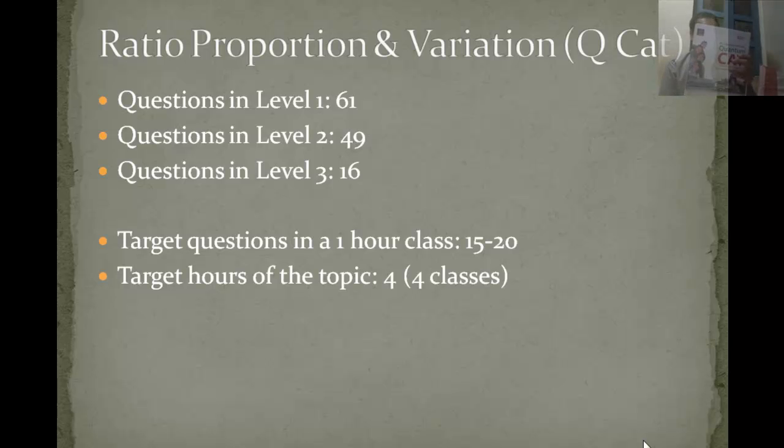It's the Quantum Cat by Arihant Publications by author Sarvesh Kumar. For example, ratio proportion has questions divided into three levels - 61 in level one, 49 in level two, and 16 in level three - which can be done in four classes or four hours, targeting 15-20 questions.